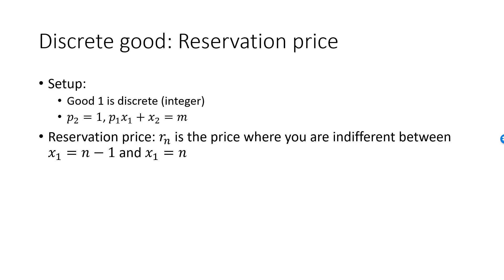Whatever she decides, the remaining income is spent on good 2. Similarly, the reservation price 2, R2, is the price where she is indifferent between 1 unit of good 1 and 2 units of good 1. In general notation, the reservation price Rn is the price where she is indifferent between consuming n-1 units and n units of good 1, where n is an arbitrary positive integer.